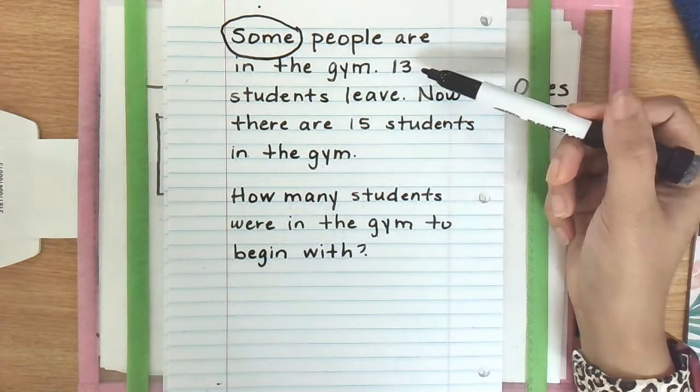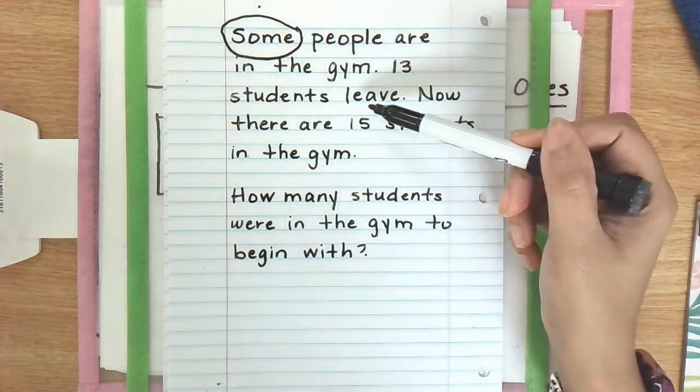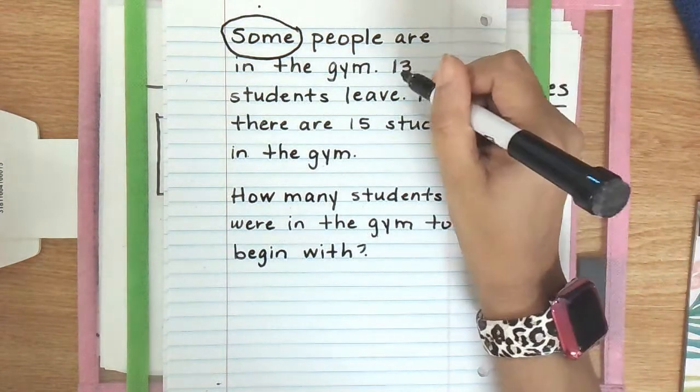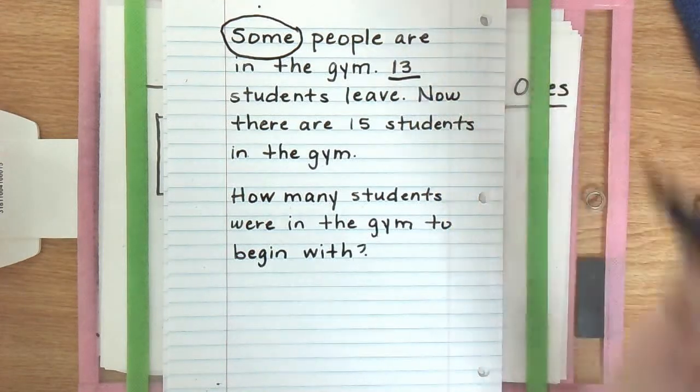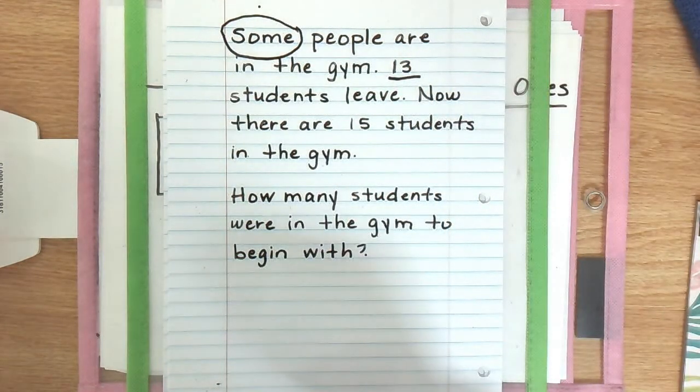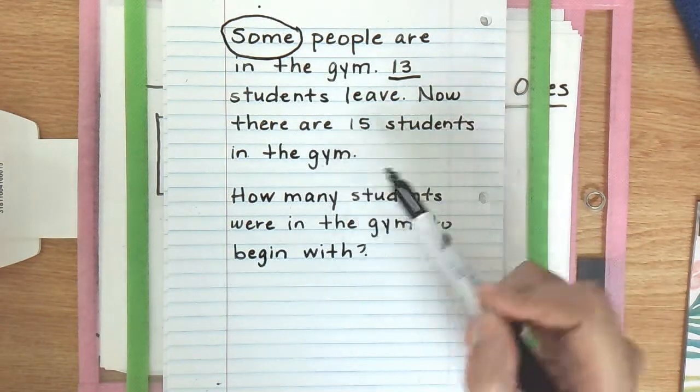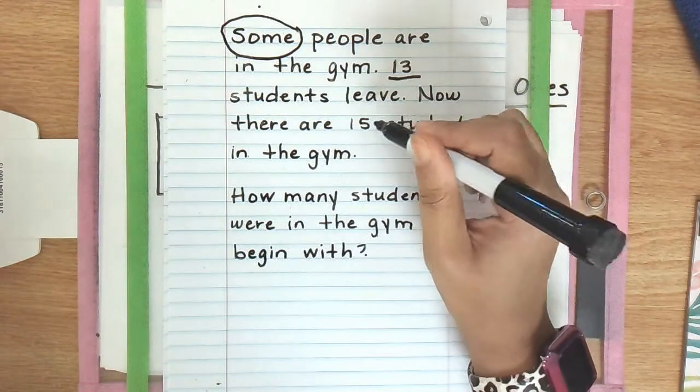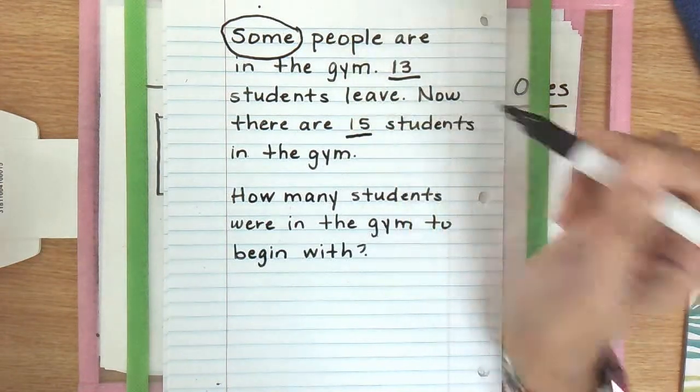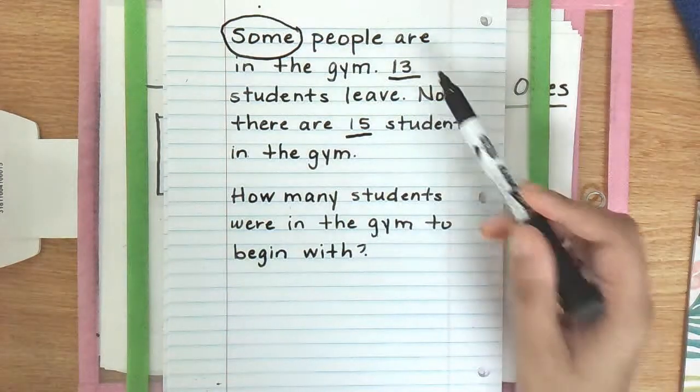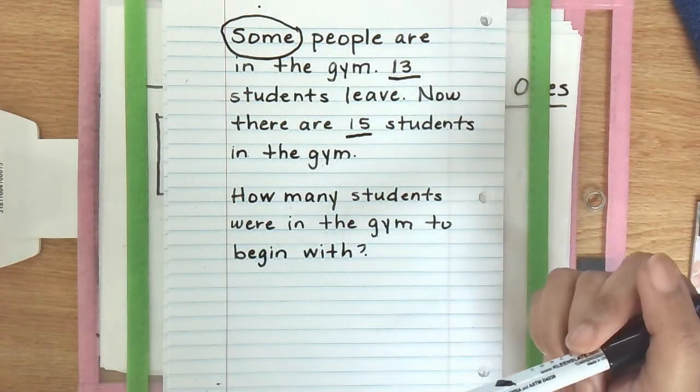Now we're going to move on to the second sentence. 13 students leave. So we're going to know that we definitely need that number 13. So we're going to underline that number 13. Next it says now there are 15 students in the gym. We are also going to need the number 15. So we know that some people are in the gym, 13 students leave and there are 15 students in the gym.